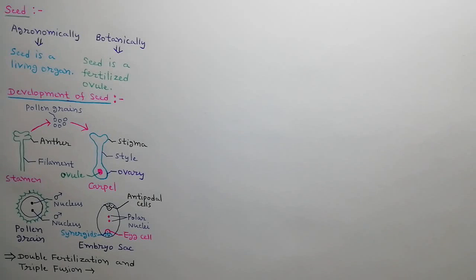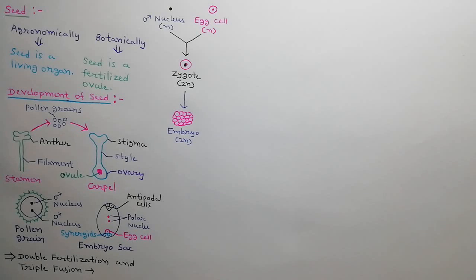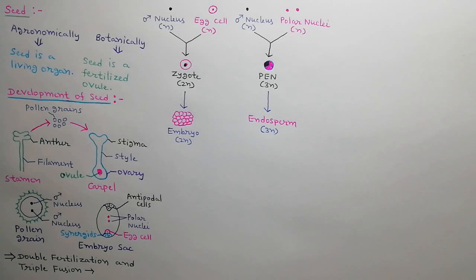Double fertilization and triple fusion are the characteristic features of angiosperms. Double fertilization means fertilization takes place two times. In first fertilization, one male nucleus fuses with egg cell and produces a diploid zygote which further develops into a diploid embryo. In second fertilization, another one male nucleus fuses with two polar nuclei and forms a triploid PEN which further develops into a triploid endosperm which provides nutrition to developing embryo. PEN stands for primary endosperm nucleus.